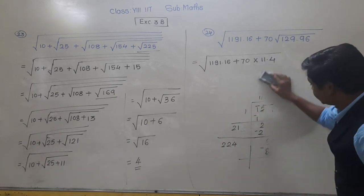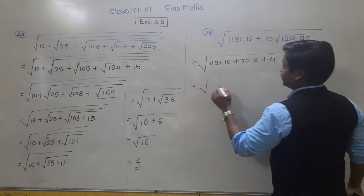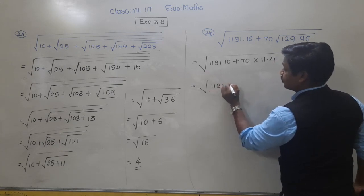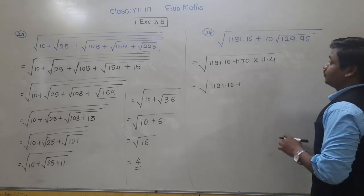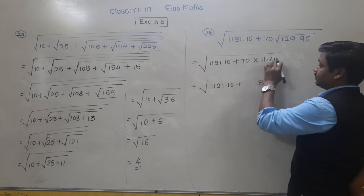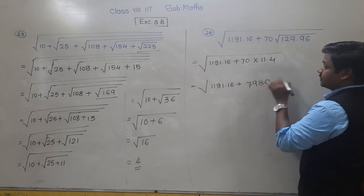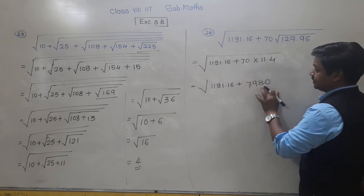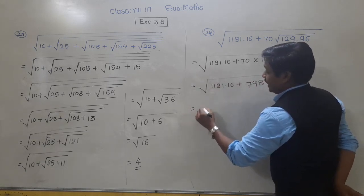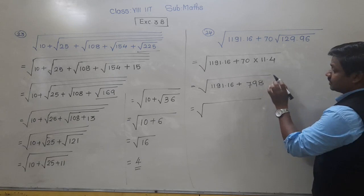This was rough work. Now: 70 multiplied by 11.4 is 798. So we have 1191.16 plus 798.00. Adding: 1191.16 plus 798.00 equals 1989.16.